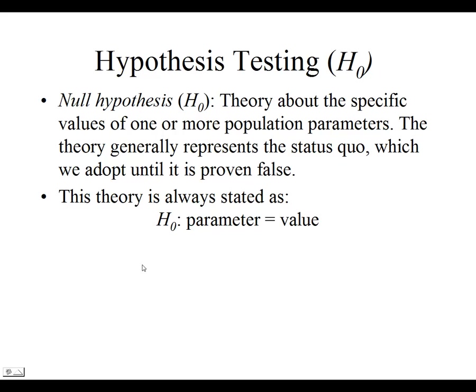The null hypothesis, symbol H₀, always has the equal sign. We're going to have a parameter equal to some value. We can't actually prove that the parameter equals that value, but if we can't prove otherwise then we are stuck with that and the status quo will be what is assumed.